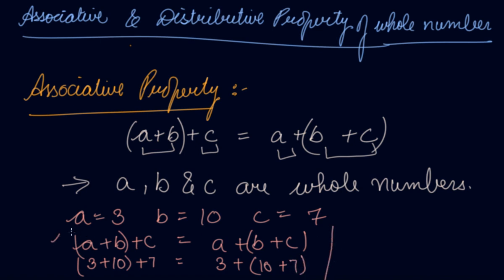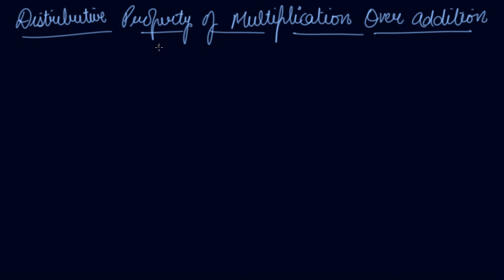Let's solve both sides. According to BODMAS, we need to solve the brackets first. On the left side: 10 + 7 = 17, then 3 + 17 gives you 20. On the right side: 3 + 10 = 13, then 13 + 7 gives you 20. Both sides equal 20, which confirms the associative property: a + (b + c) = (a + b) + c, where you can place the brackets as suits you.